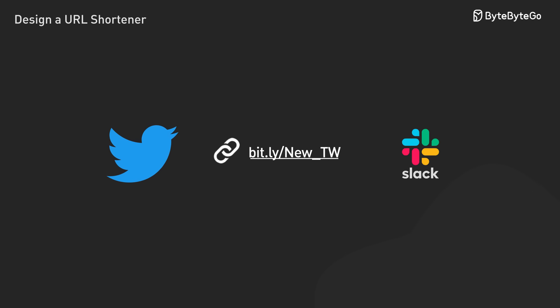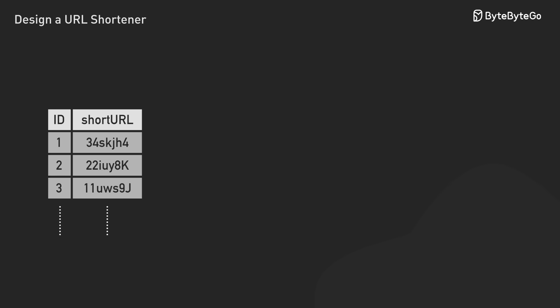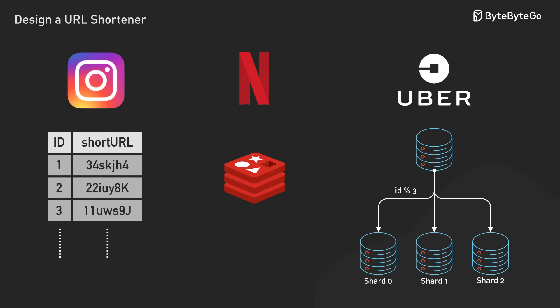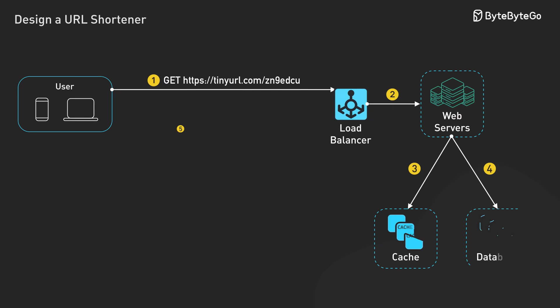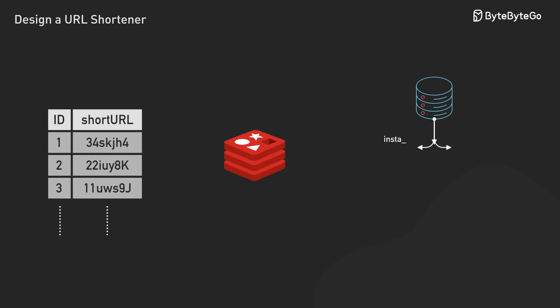Every major tech company has built some version of this. Twitter shortens URLs in tweets, Slack does it in messages, even your company's internal tools probably do this. The techniques we talked about — unique ID generation, caching strategies, database sharding — these patterns show up everywhere. Instagram uses similar ID generation for photos, Netflix uses similar caching for video metadata, Uber uses similar database splitting for trip data. The next time you click a shortened link, you'll know there's a whole system working in milliseconds to get you where you're going, and you'll start recognizing these same patterns in every app you use.